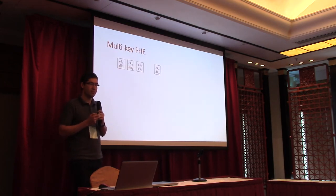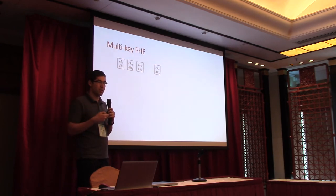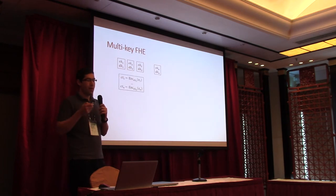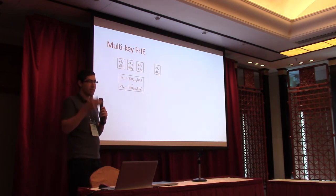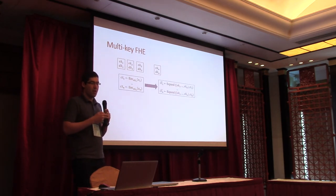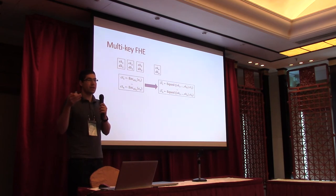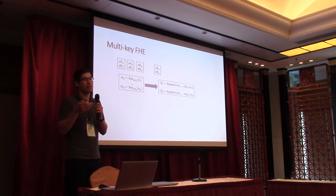We heavily use the notion called multi-key FHE. In multi-key FHE, we can sample a sequence of n encryption keys and decryption keys: ek1 through ekn, and dk1 through dkn. We can encrypt a message according to each encryption key — x1 under ek1, x2 under ek2, and so on — getting a sequence of n ciphertexts. Using these n ciphertexts, we can re-randomize them into a ciphertext of the same message but under a common key, which is essentially the concatenation of all the encryption keys.